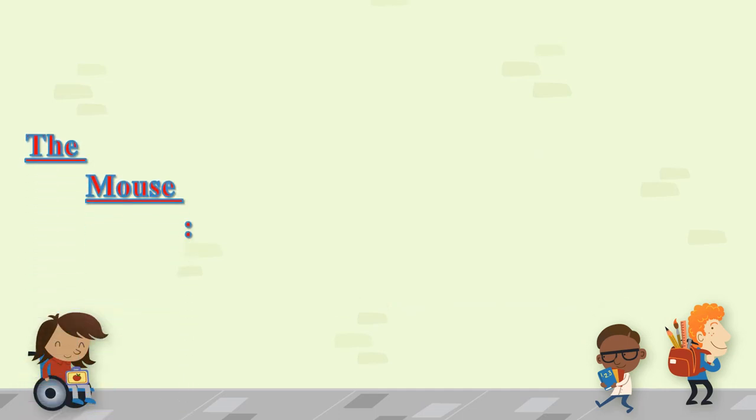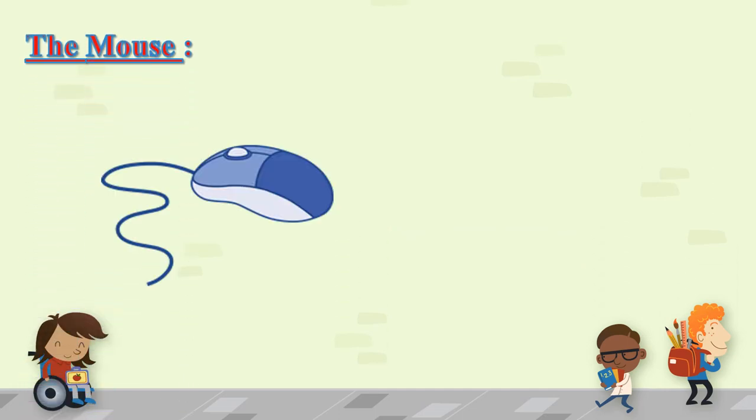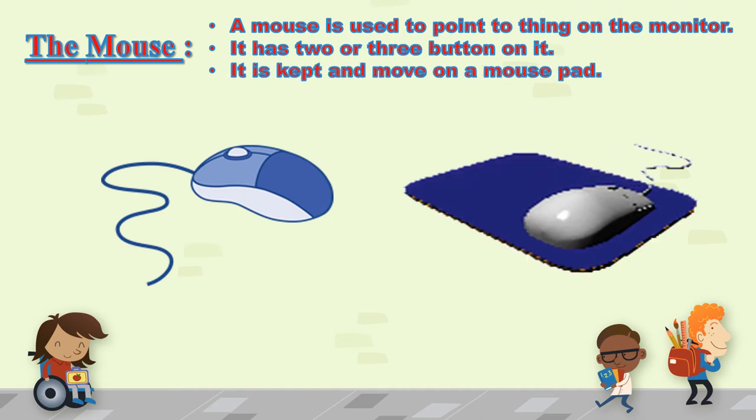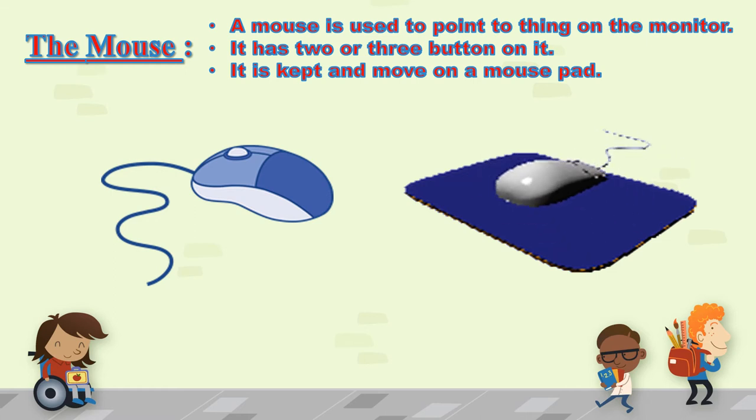The mouse. A mouse is used to point to things on the computer. It has two or three buttons on it. It is kept and moved on a mouse pad. So mouse has two or three buttons on it and it is used to point at things on the screen.